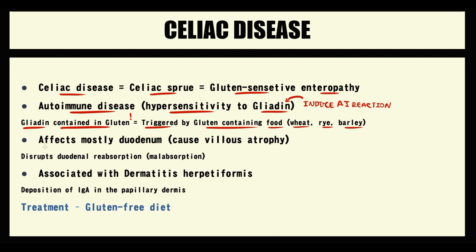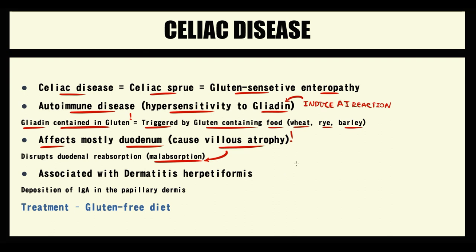Celiac disease affects mostly the duodenum, and more specifically, it affects the villi of the duodenum. Celiac disease causes villus atrophy, and without villi we cannot provide proper absorption of nutrients. So the major symptom of celiac disease is malabsorption.